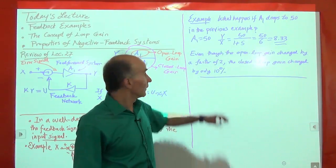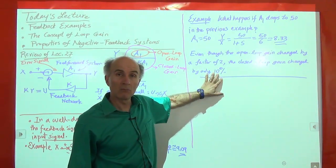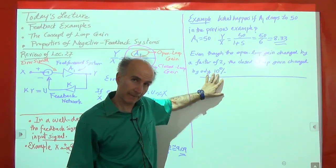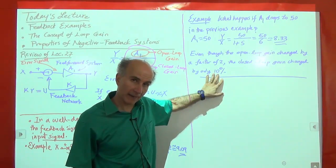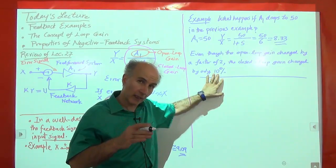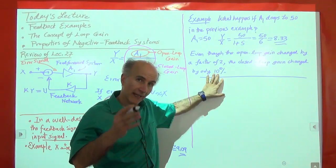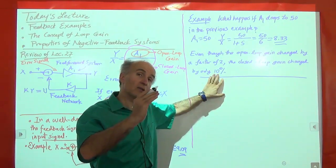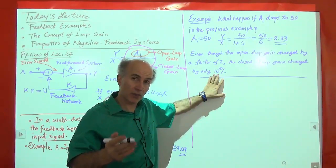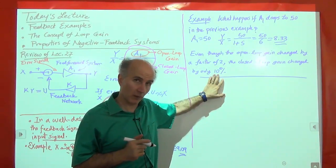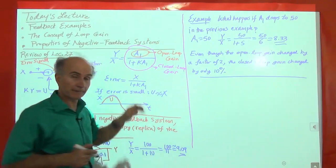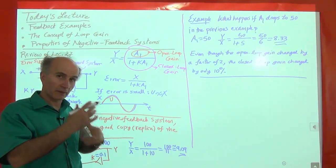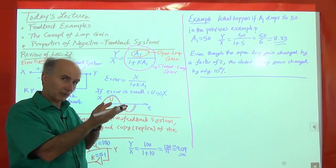This is perhaps the most important result that comes from negative feedback: changes in the open-loop gain do not affect the closed-loop gain that much. A significant change in A1 leads to only a minor change in the closed-loop gain Y over X. That's the beauty of negative feedback. We'll elaborate on this more, but this is the net result.